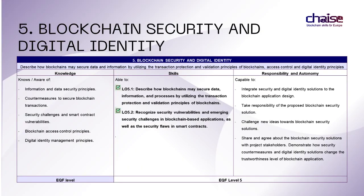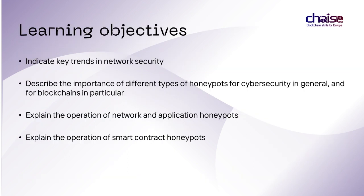This lecture is part of Module 5, Blockchain Security and Digital Identity. The main objectives of this course are to enable you to recognize and discuss the key trends in computer and network security, specifically blockchain technologies. Upon completion, you should be able to describe the importance of different types of honeypots for cybersecurity in general and for blockchains in particular. You should understand the motivation for the use of node, application, and smart contract honeypots, and be able to explain the principles of their operation.